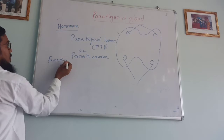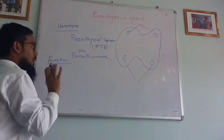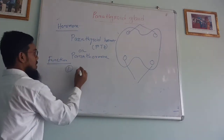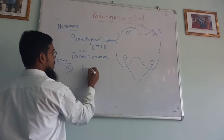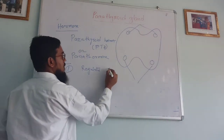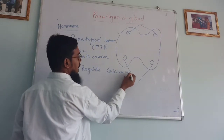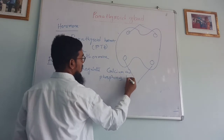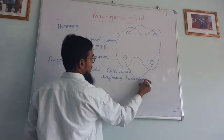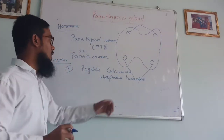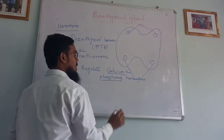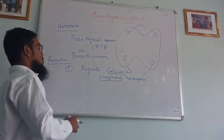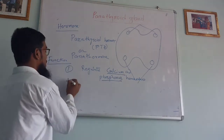What are the functions of parathyroid hormone? Parathyroid hormone performs two functions. One function is they regulate calcium and phosphorus homeostasis — two important minerals which are very important for our body. They maintain the levels of calcium and phosphorus in our body.